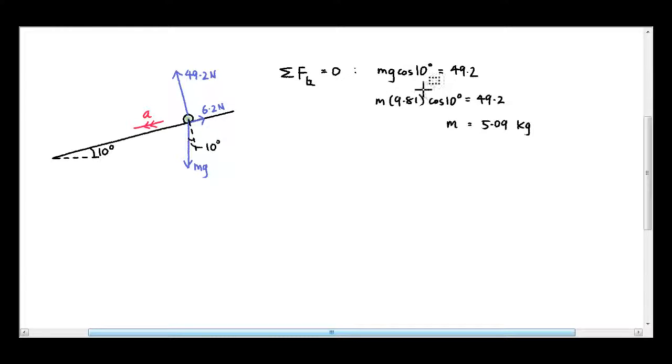Again, this is based on the fact that the acceleration is purely along the slope, so there is no acceleration in the direction perpendicular to the slope. Now you put in all the numbers, you can calculate the mass to be 5.09 kg.